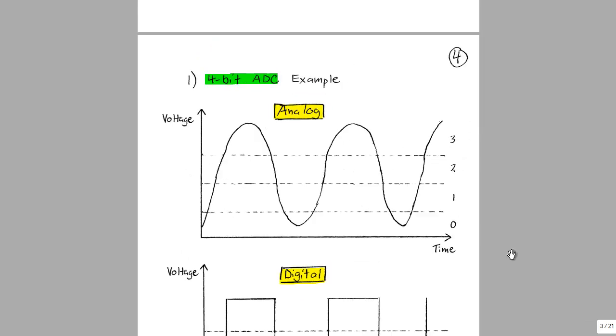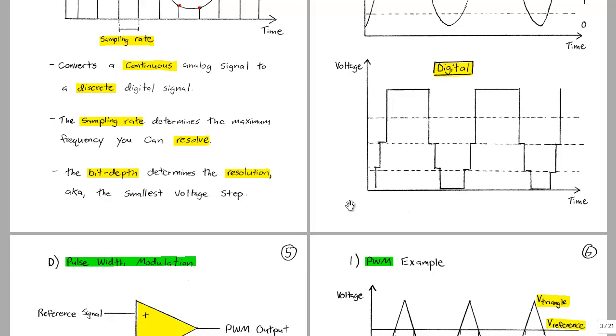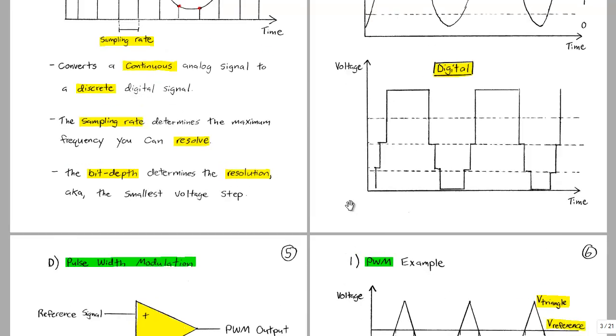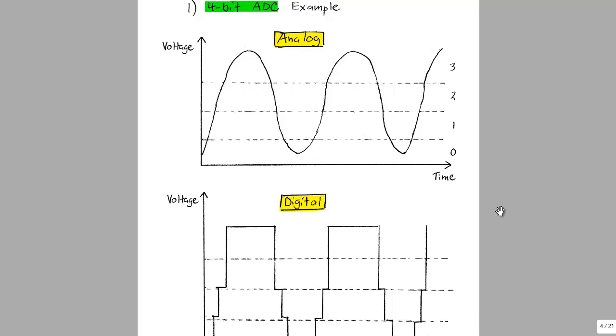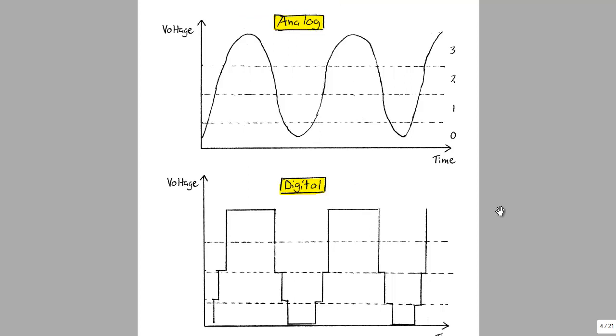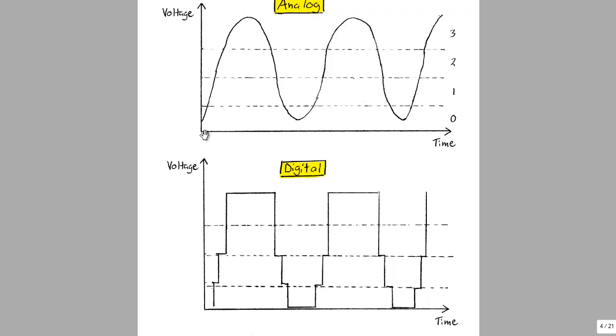So I'm going to zoom out here, and we can see what the resulting digital signal looks like. So if you notice, we've got a smooth analog signal here, and then once we convert to digital, it looks kind of blocky and not very resemblant of the original signal. So as you increase the bit depth and the sampling rate, this smooths out and it looks more and more like the analog signal. But this is just a basic example to show you what's going on in an analog to digital conversion.